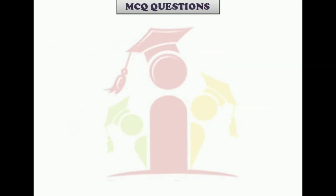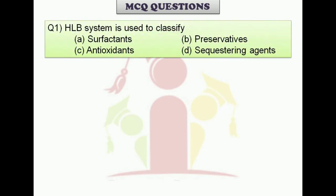Now here are some important questions from previous years of GPAT. I will give you a five-second timer after each question — try to answer before I reveal the answer. Question 1: The HLB system is used to classify — option A: surfactants, option B: preservatives, option C: antioxidants, option D: sequestering agents. Pause the video and try to answer. The correct answer is option A: surfactants.